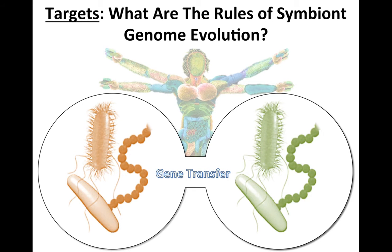I'll cover a few kinds of questions. The first question, which I'm going to spend about 60% of the talk on, is: what are the rules of symbiont genome evolution? When symbionts occupy a niche of a host, how much genetic exchange is there going on between different types of microbes in a common host?